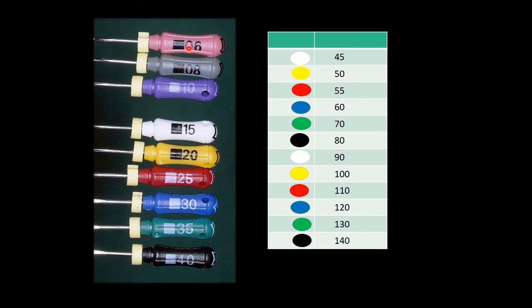The smaller files 6 and 8 were introduced and the larger ones were also introduced. They have been color coded for easier recognition. The pink depicts number 6, the gray number 8, the purple number 10. These are unique colors. The 15 is white, 20 is yellow, 25 is red, 30 is blue, 35 is green, 40 is black. These colors are repeated from 45 to 80 and 90 to 140, but the earlier ones are unique colors.